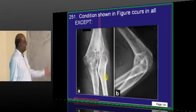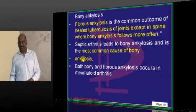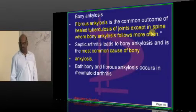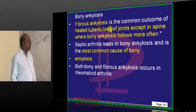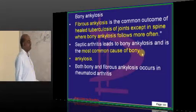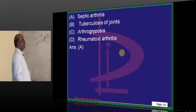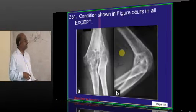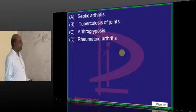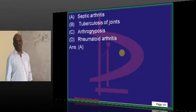What is this condition typically being shown? Bony ankylosis versus fibrous ankylosis. Fibrous ankylosis is the common outcome of healed TB of the joints. Except in spine, it lead to bony ankylosis. Septic arthritis leads to bony ankylosis. And it is the most common cause of any bony ankylosis that you see. What you are seeing here is an example of a fibrous ankylosis. Fibrous ankylosis is typically caused by TB, arthrogryposis or rheumatoid arthritis. TB causes bony ankylosis only in spine. And everywhere septic arthritis leads to bony ankylosis.